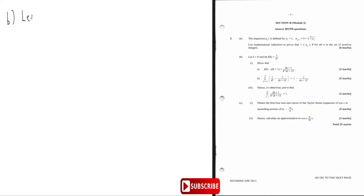Let k be greater than zero and let f of k be equal to one over k squared. They say show that f of k minus f of k plus one is equal to that expression there.